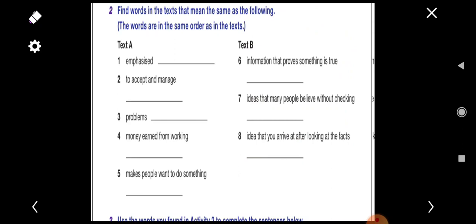Now here we have question number two in your book. Find words in the text that mean the same as the following. We'll search together in the text, text number A and text number B, for the meaning of each vocab or each definition here. We have number one. Emphasized means to confirm. Yes, we'll search in text A for the answers. What do we mean by emphasize? Yes, it means stressed. To accept and manage. Yes, face.